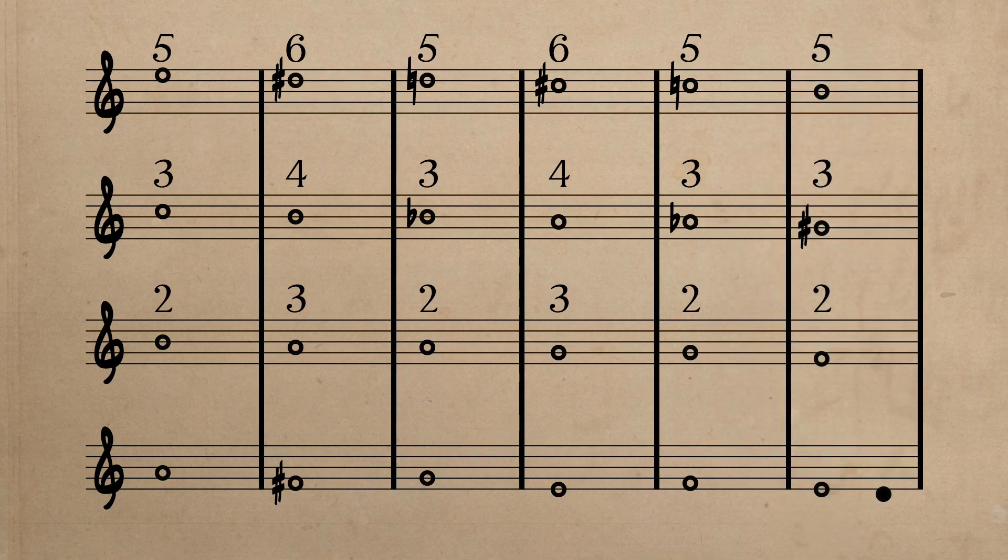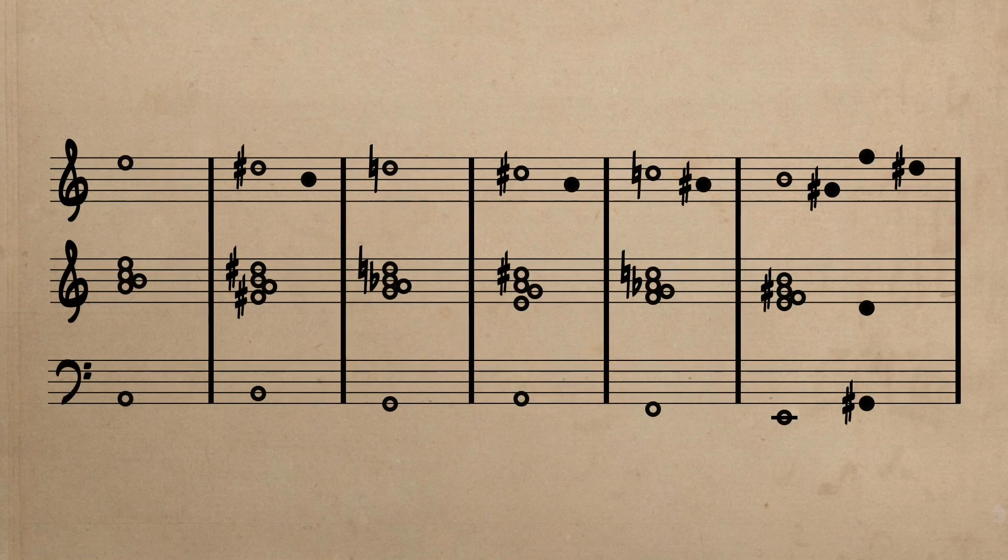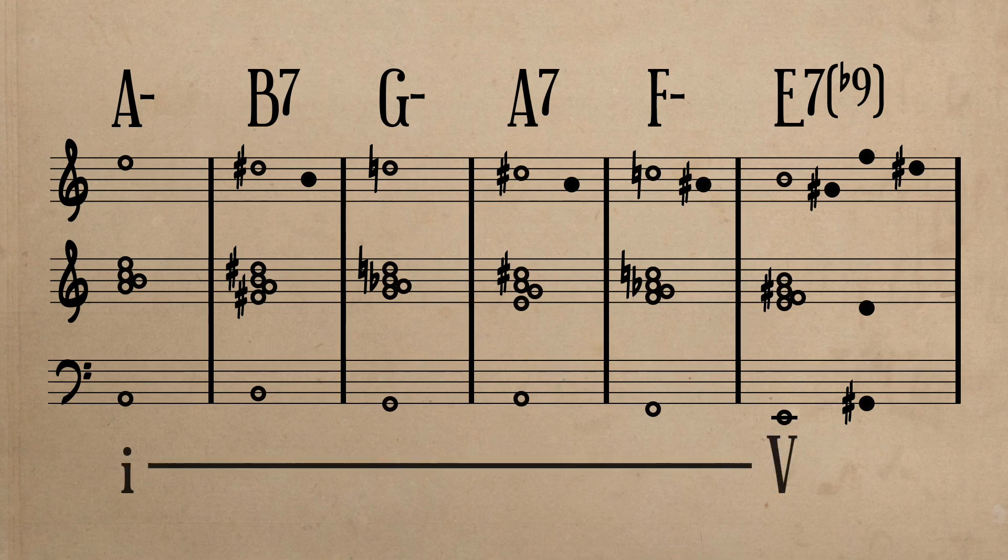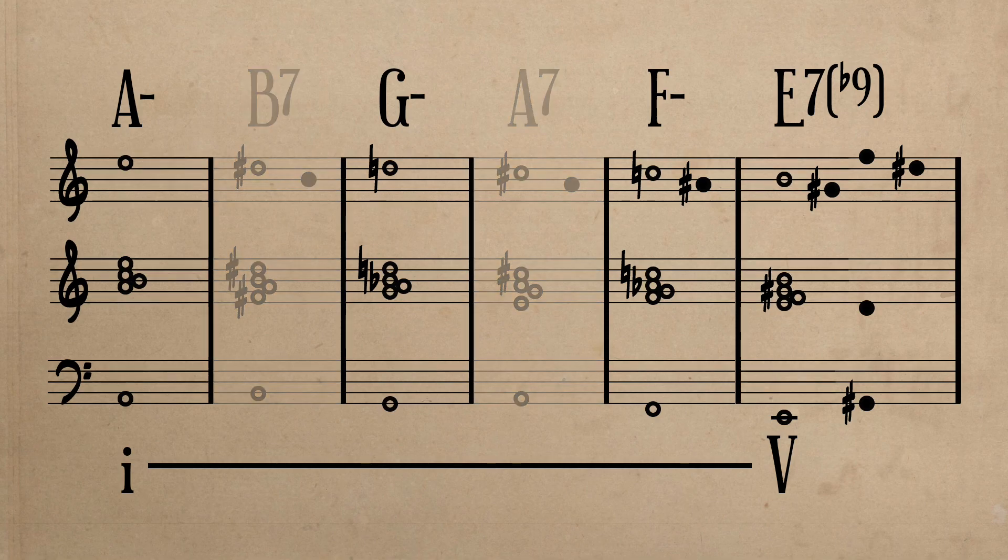Now that we have an understanding of the counterpoints between the outer voices and the inner voices, and can see all of the individual patterns, let's take a look at a reduction of the entire theme and consider the harmony. Personally, I would analyze the harmony as simply being an embellished 1-5 progression. This is because the chords of measures 2 and 4, B7 and A7, are not structural harmonies, but are prolongational chords used to enhance the motion from A minor to G minor.